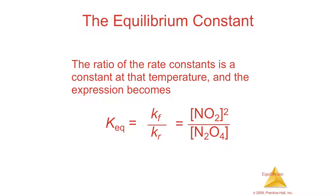This fraction of two constants — the forward rate constant divided by the reverse rate constant — is itself a constant; it doesn't change. So now we have a constant that tells us how much product or reactant we're going to make. A very large number means lots of products; a number much lower than one means mostly reactants; anything near one means roughly equal amounts of reactants and products. This constant is very useful, and as long as it's a closed system, you can figure out where the equilibrium sweet spot will be.